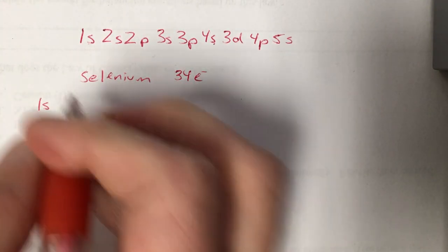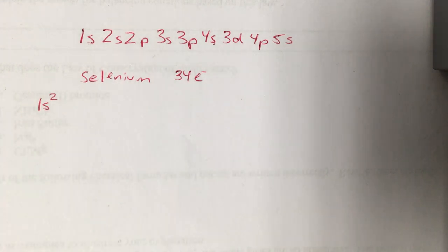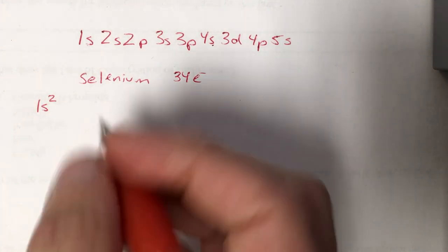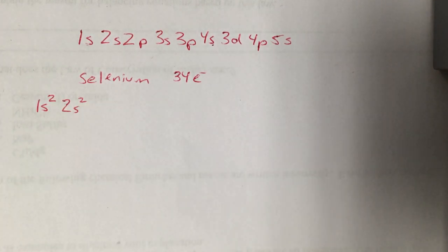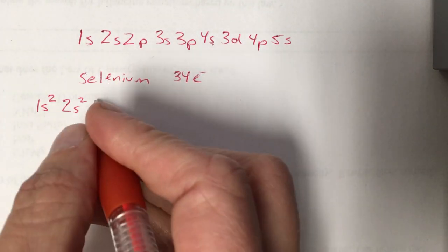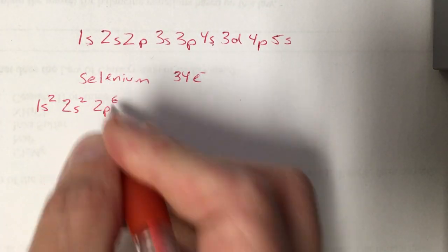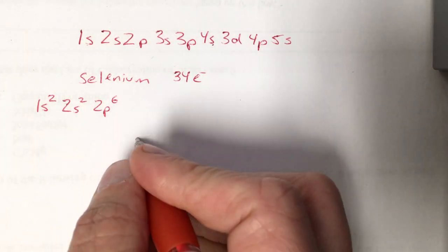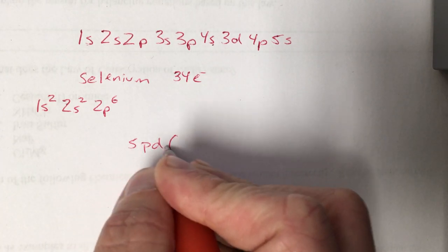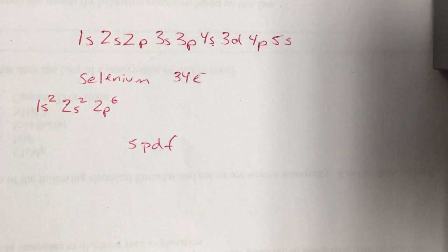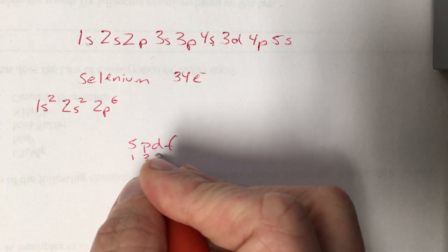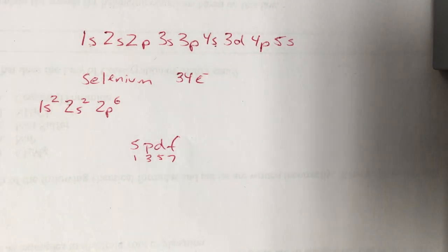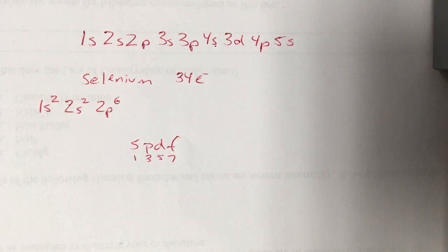So the 1s orbital can hold two electrons. All s orbitals can hold two electrons and no more. Next one up is 2s. It holds two electrons as well. Next one up is 2p. P orbitals can hold six. And again if you forget that, s, p, d, f. That's the order of orbitals. Just write down your odd numbers. 1, 3, 5, and 7. That's the number of sub-orbitals they have.